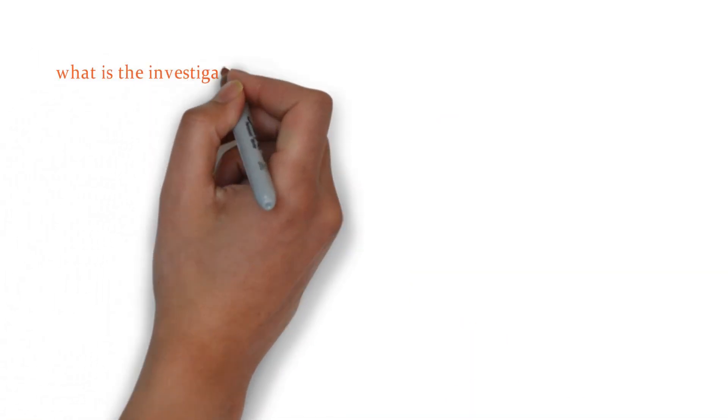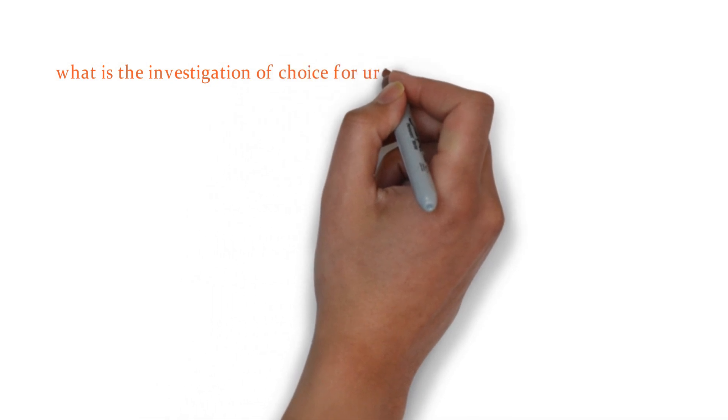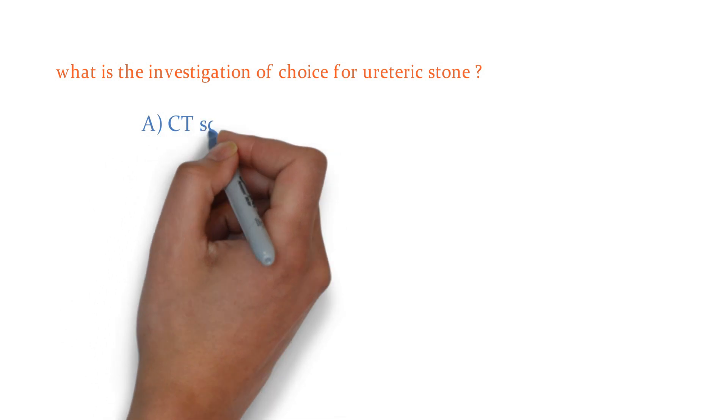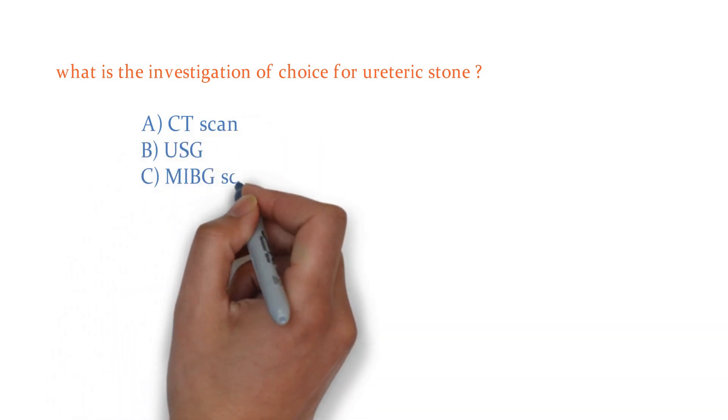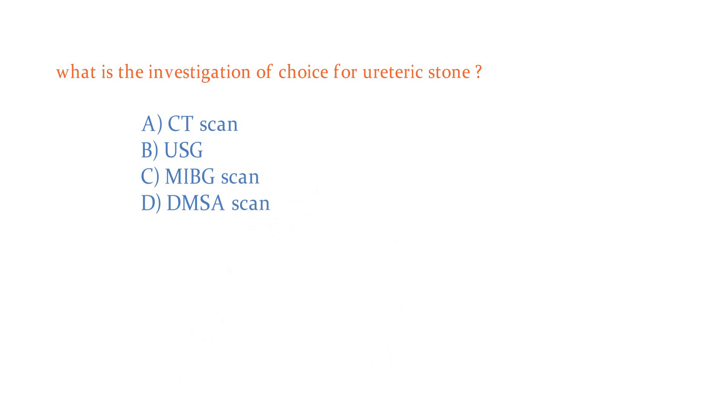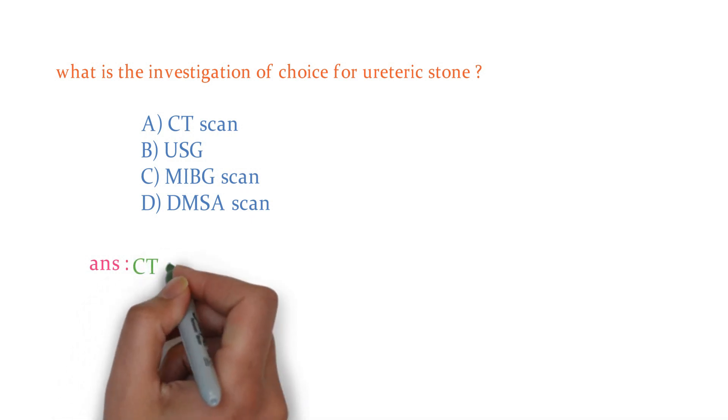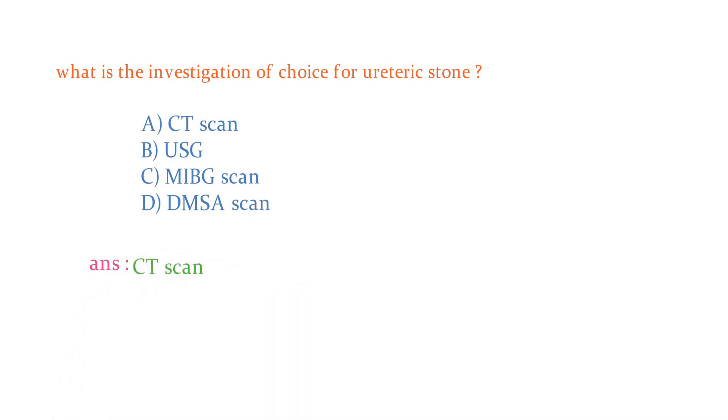I would like to ask one more question: what is the investigation of choice for ureteric stones? The options are CT scan, ultrasound, MIBG scan, or DMSA scan. Yes, the right answer is CT scan. All of the routine methods have become less useful with the advent of more sensitive and specific non-enhanced computed tomography scanning, that is CT scan, for both renal and ureteric stones.